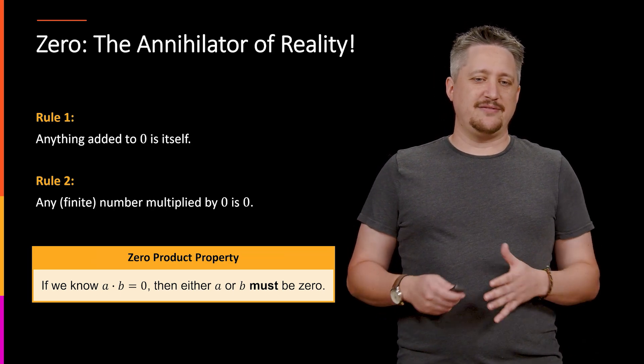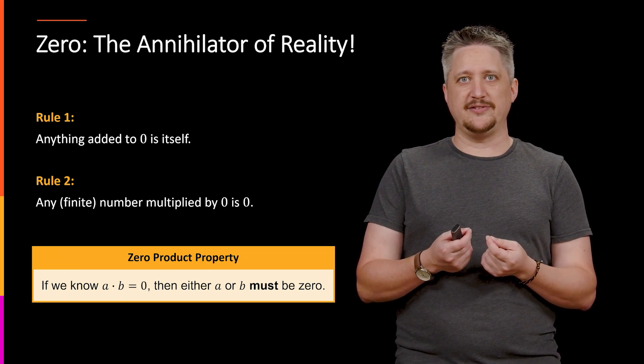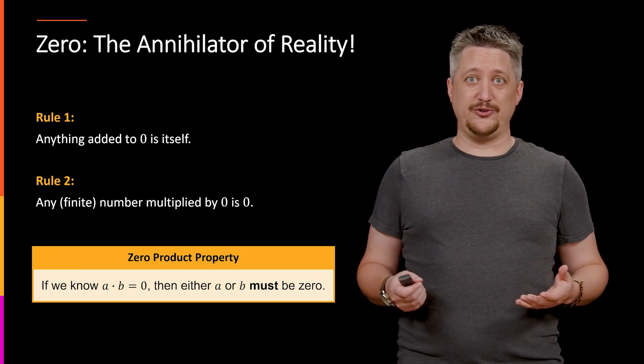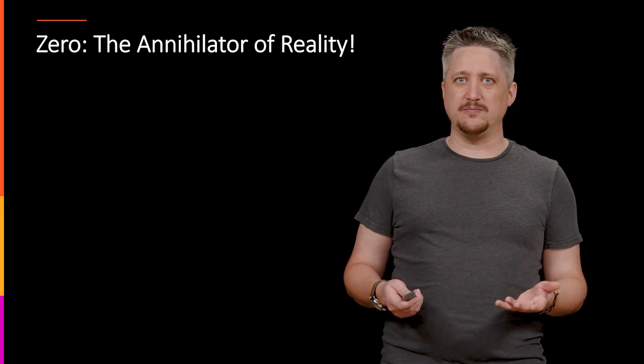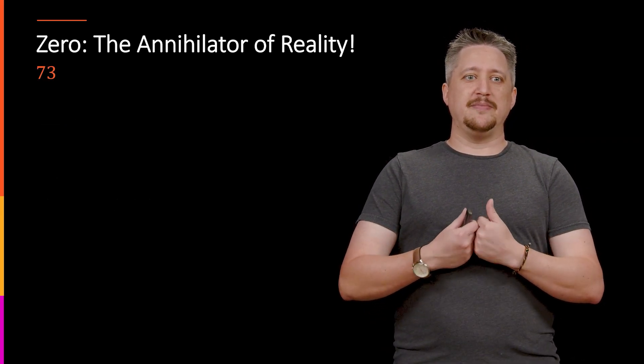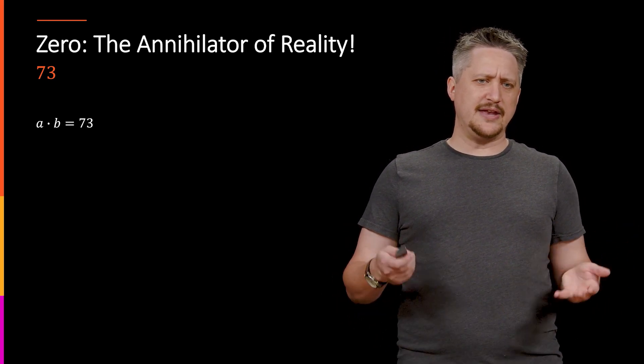And it turns out that there's something very special about 0 itself, meaning that if we know the product of two things is some other number, we know nothing about those first two real numbers. So as an example, let's say we wanted 73. We knew there was some A times B equals 73. Can we tell anything about A or B?